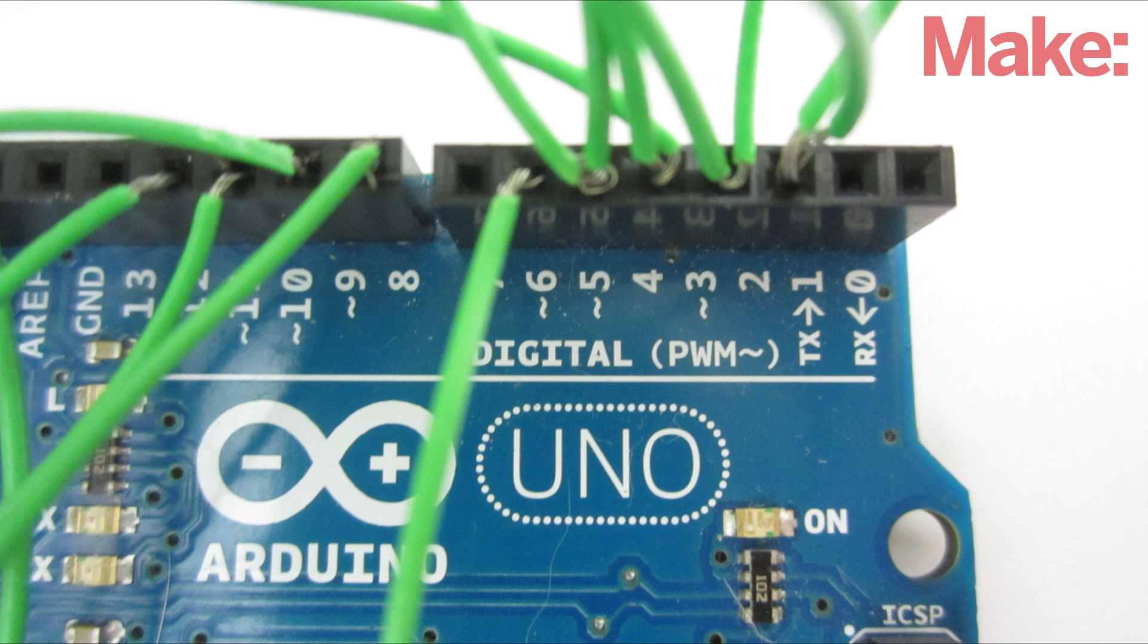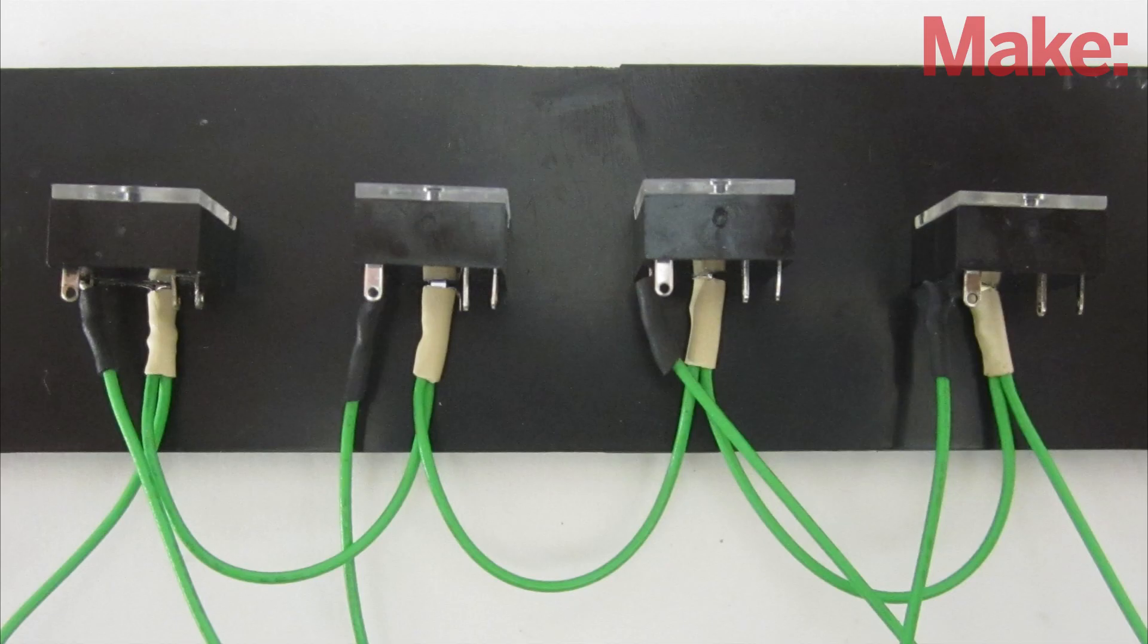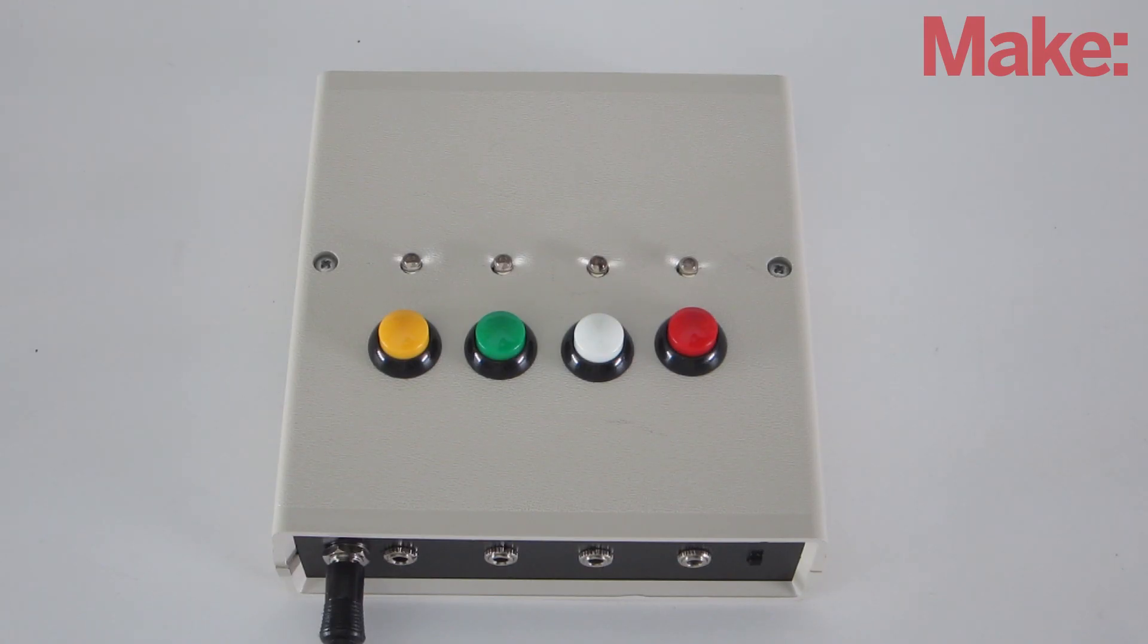The LEDs are wired to pins eight through eleven and ground. Lastly, the mode switch is connected to pins six and ground. The external switch connectors are wired in parallel with the buttons. Once everything is connected, close up the housing.